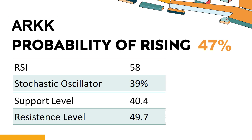Trend Outlook: ARKK has a 47% probability of rising stock price. When the probability of rising is lower than 50%, the probability of falling is relatively high. Combining multiple technical analysis indicators, ARKK has five bullish signals and two bearish signals. ARKK's short-term support level is 43.2. If it falls below 43.2 during the session, it will have a chance to test 40.4.